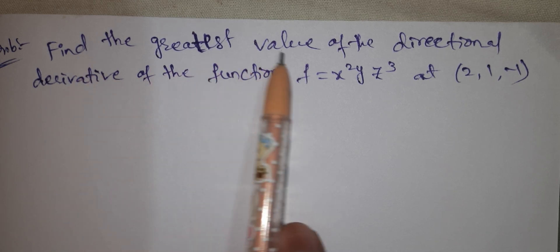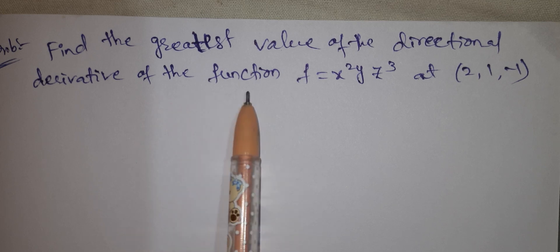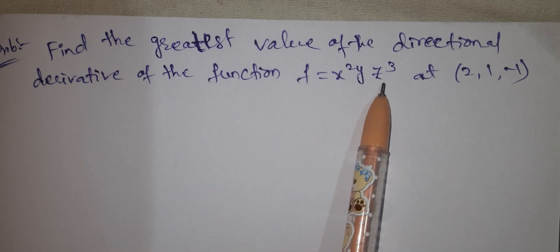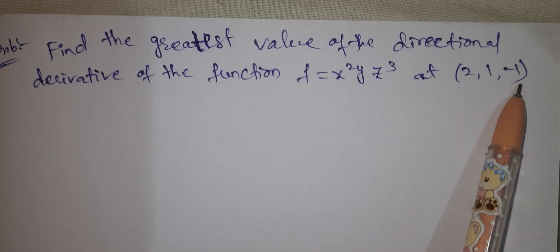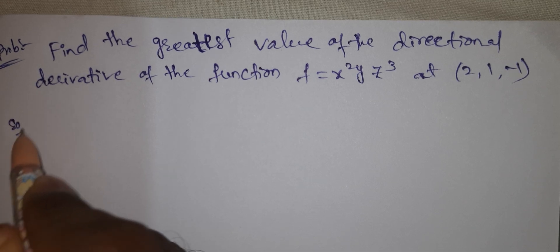Find the greatest value of the directional derivative of the function f equals x squared yz cubed at the point (2, 1, -1). Let's see.